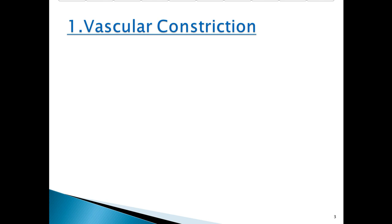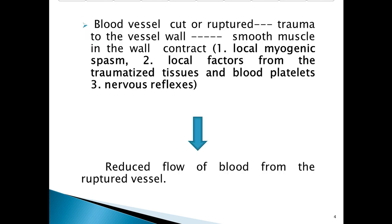Firstly, vascular constriction. When a blood vessel is cut or ruptured, trauma to the vessel wall causes smooth muscles in the wall to contract — firstly by local myogenic spasm, secondly by local factors from the traumatized tissue and blood platelets, and thirdly by nervous reflexes. All three cause contraction of smooth muscles in the blood vessel wall.